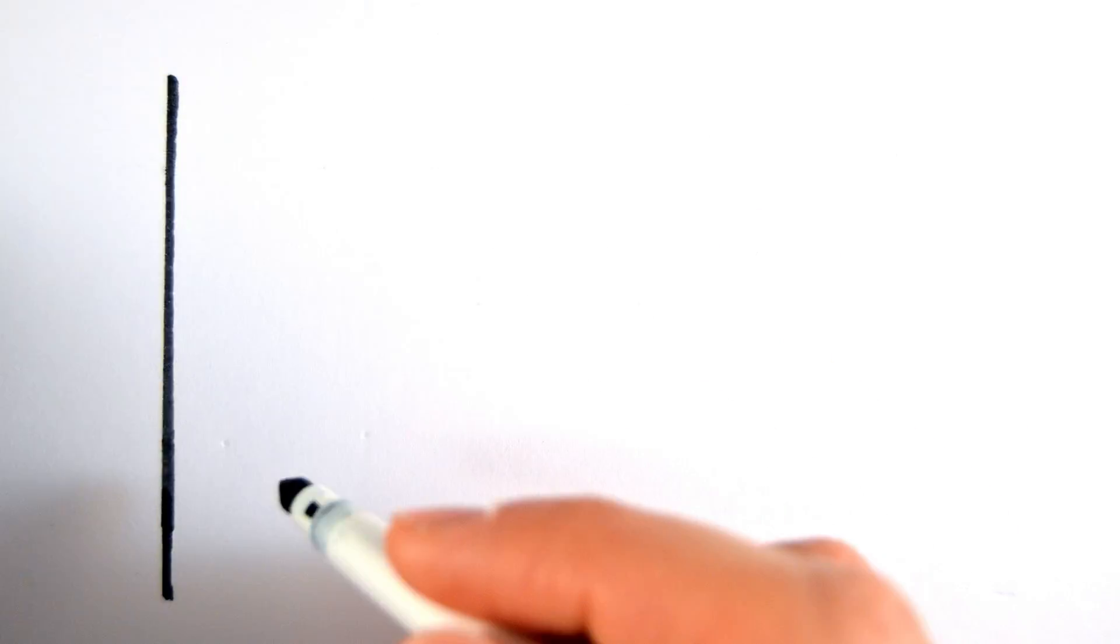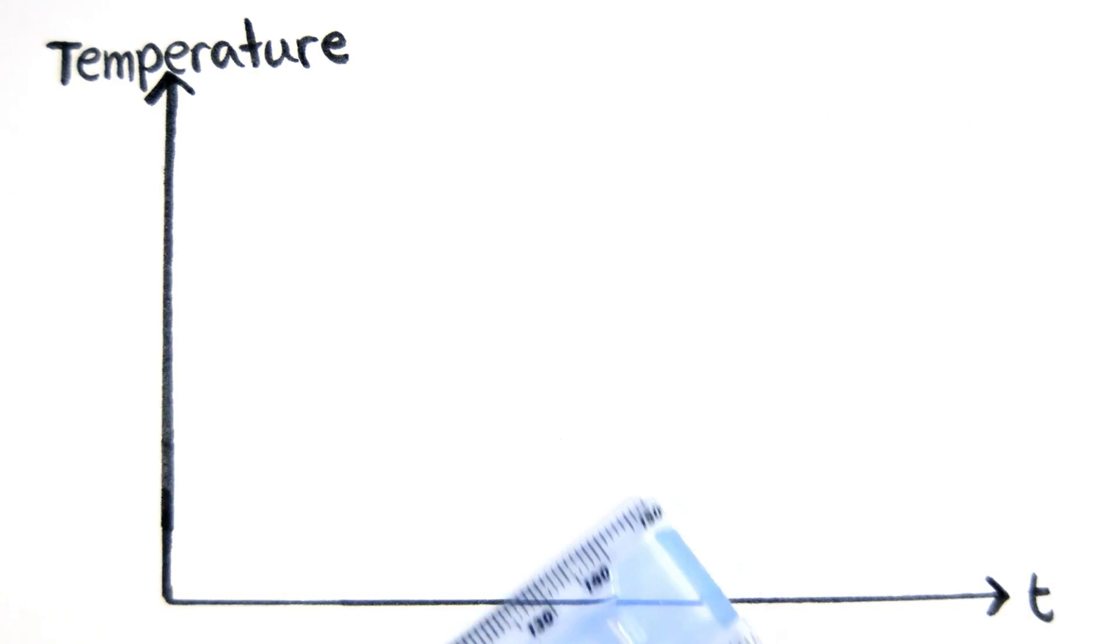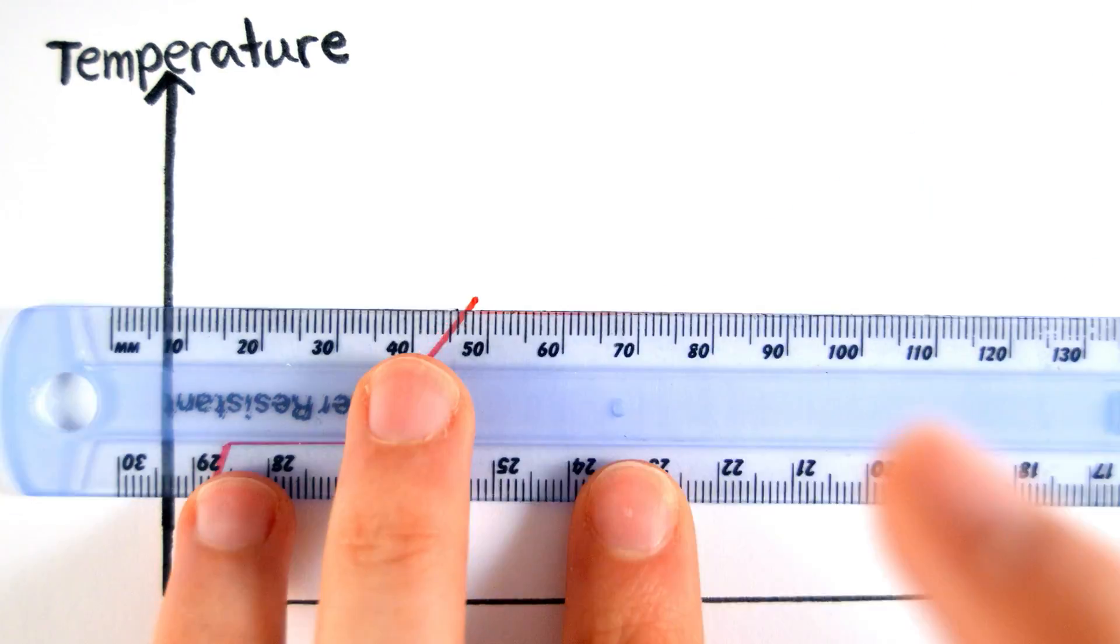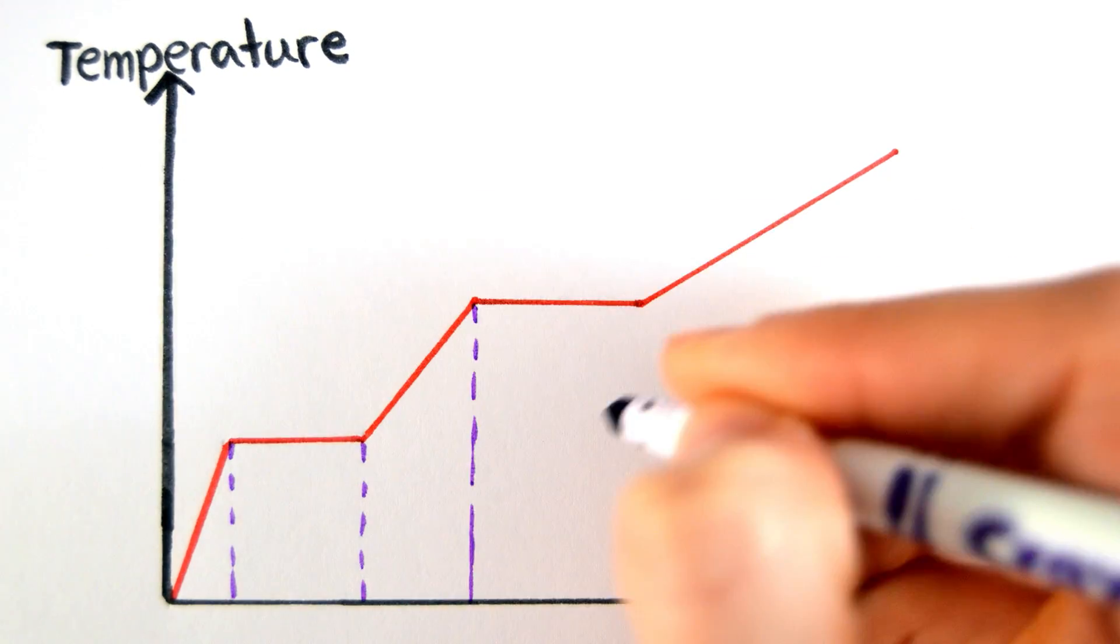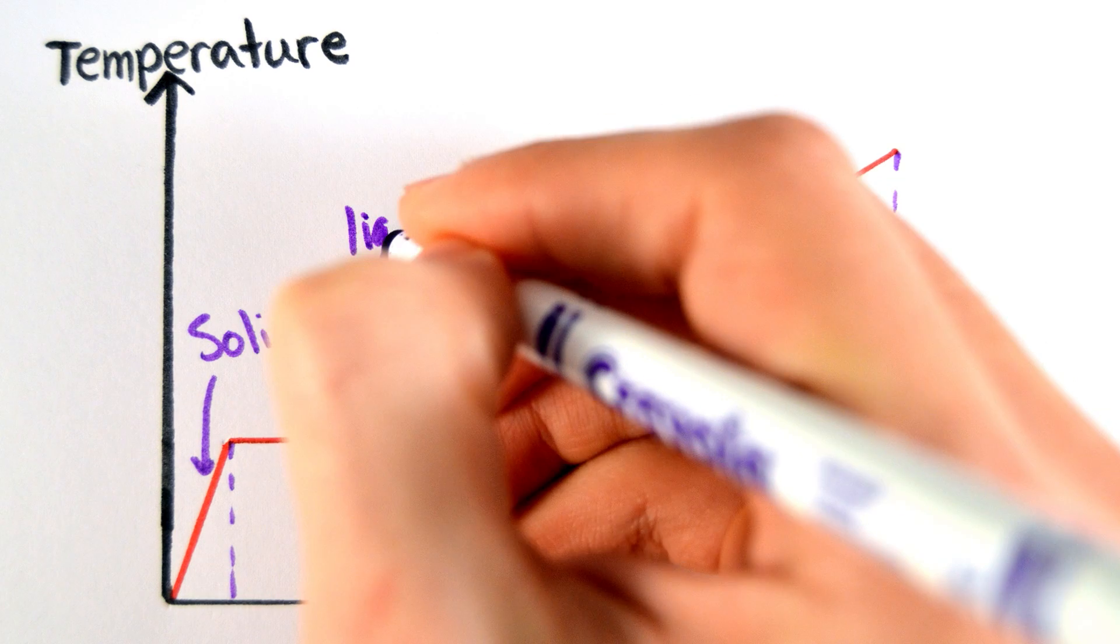If you were to sketch a graph of temperature against time when heating a substance, you can see that when it changes state, there is no change in temperature until all of the substance reaches this state.